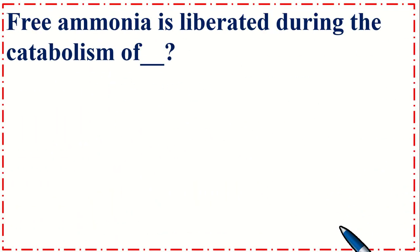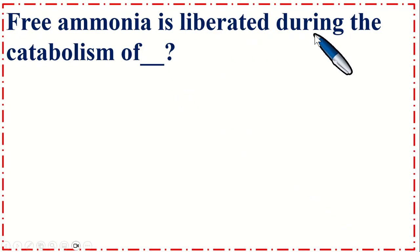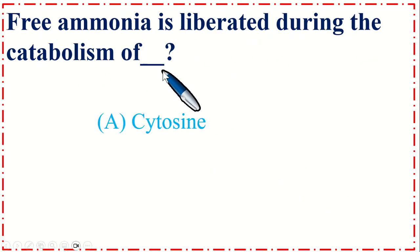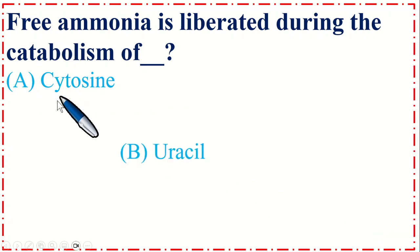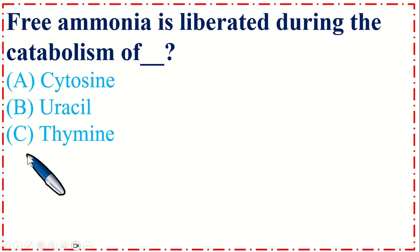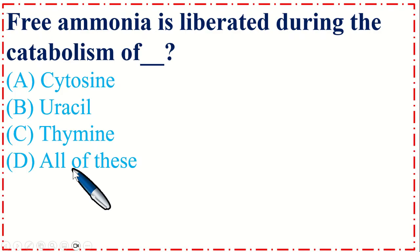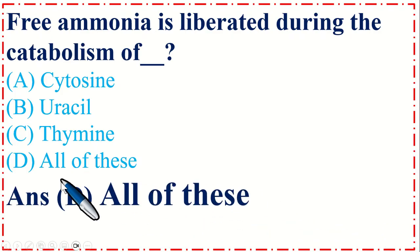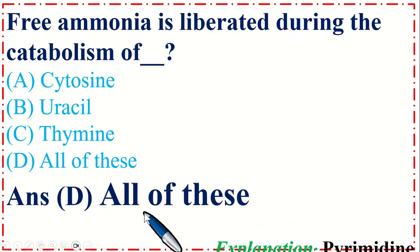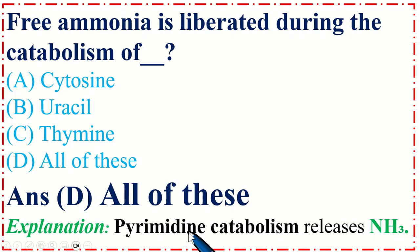Dear students, this is a very important MCQ. Free ammonia is liberated during the catabolism of: A. Cytosine, B. Uracil, C. Thiamine, and D. All of these. The correct option is D, All of these. Pyrimidine catabolism releases NH3.